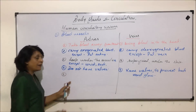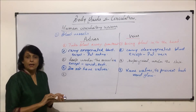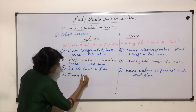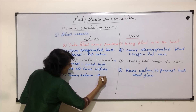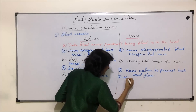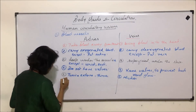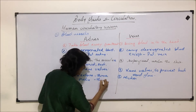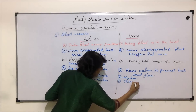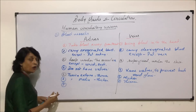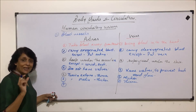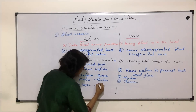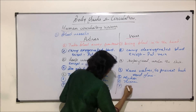Now we will take the histology part. We have seen the three layers. Tunica externa is thinner in arteries and thicker in veins. Tunica media is thicker in case of arteries whereas thinner in veins. Then the innermost layer — in tunica interna we will consider the elastin layer, which is again thicker in arteries and thinner in veins.